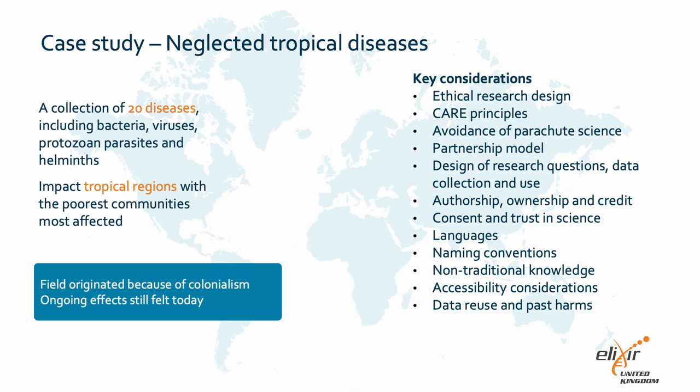We will now look at case studies of two different subfields of biological research. The first is neglected tropical diseases, which encompass a collection of 20 diseases caused by various pathogenic organisms, impacting predominantly the poorest peoples globally. The field of tropical medicine itself arose as a result of colonialism, with most research on these diseases being performed in order to maximise productivity for colonial projects. The ongoing impacts of this are still felt today, most noticeably in the fact that the diseases are neglected as a research priority.